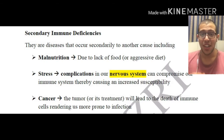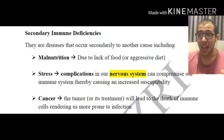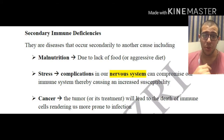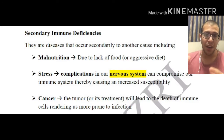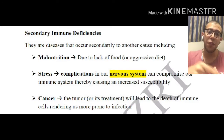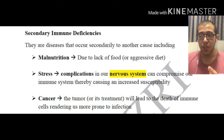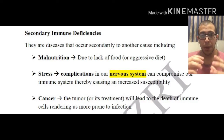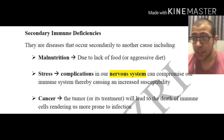Third, there is cancer. The tumor, or even its treatment, leads to the death of immune cells, rendering us more prone to infection. Essentially, these are opportunistic diseases — in malnutrition, a poor food supply leaves immune cells exhausted and less functional, so infections are triggered. Stress similarly compromises the immune system, and cancer and its treatment work the same way.